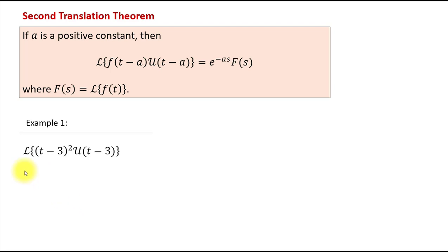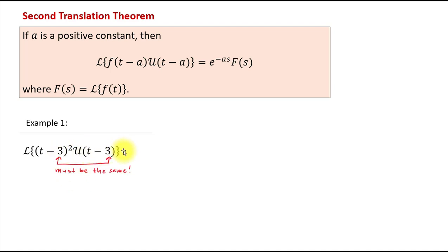Looking at a few examples will help us better understand this theorem. In our first example, we need to find the Laplace transform of the function defined by the product of the shifted function (t−3)² and the unit step function at 3. These values must be the same for the theorem to work. According to the Second Translation Theorem, the result will be equal to the product of e to the power negative as.